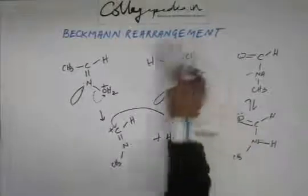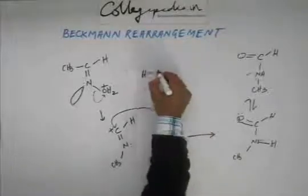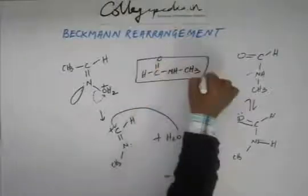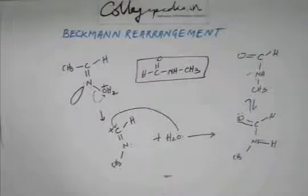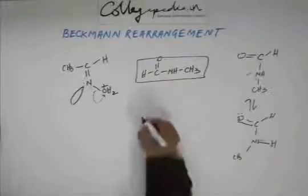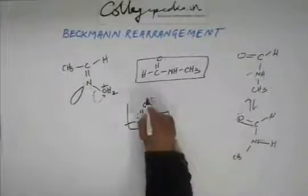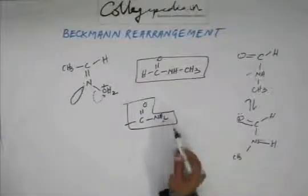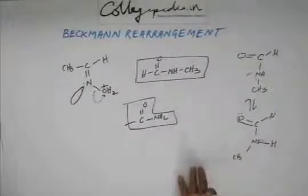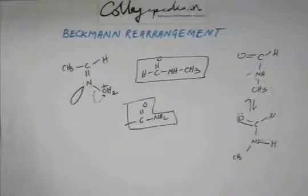To write it more properly, this compound we have got is an amide — specifically a substituted amide. The amide functional group is C double bond O and NH2. When you remove one hydrogen from the nitrogen and add another group, such as methyl, it becomes a substituted amide. This is the substituted amide you get after Beckmann's rearrangement.